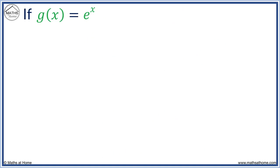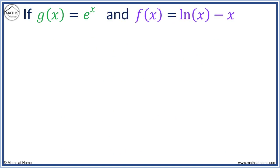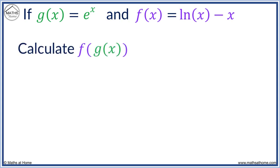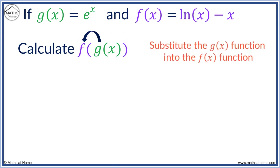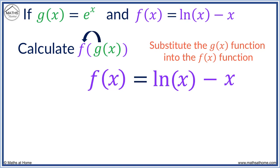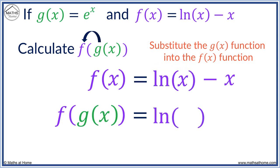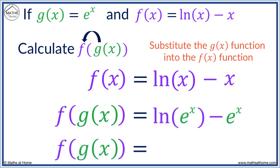If g of x equals e to the power of x and f of x equals ln x minus x, calculate f of g of x. We substitute the g of x function into the f of x function. We take the f of x function of ln x minus x and every x is replaced with g of x. So both x's will be replaced with e to the x. We have ln of e to the x, then we subtract e to the x. We simplify: ln and e are inverse functions, which cancel out to leave x. We then have minus e to the x. So f of g of x equals x minus e to the x.